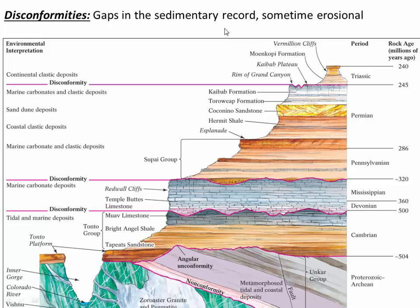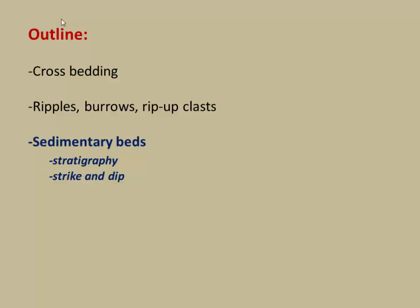Disconformities represent gaps in the sedimentary record and are sometimes associated with erosion — sometimes deep erosion — of the underlying sedimentary unit. It's important to recognize that although sedimentary rocks are a record of time, they're not necessarily a continuous record of time. Some units can be deposited very quickly, and there can be pauses like disconformities where nothing is deposited. They're a good record, but not a perfect one. In summary, we've covered cross bedding, ripples, burrows, rip-up clasts, sedimentary beds, and how we can interpret stratigraphy on the long scale.